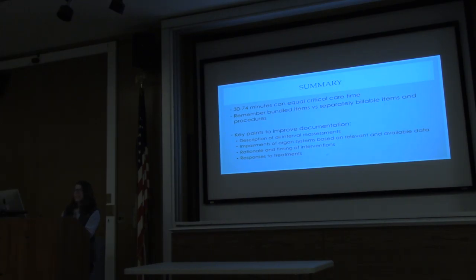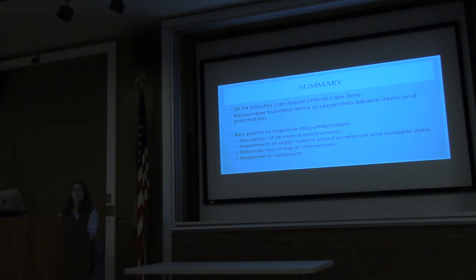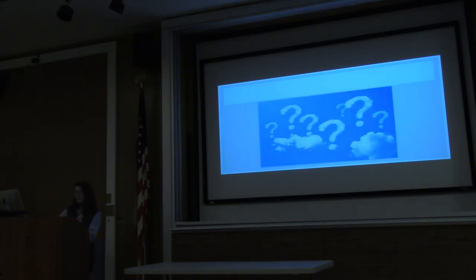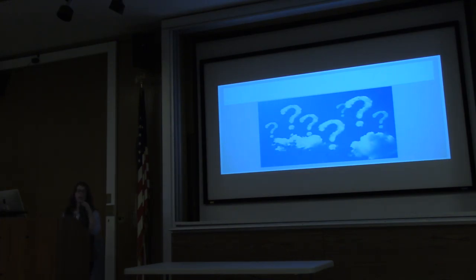Summary: 30 to 74 minutes is the 99291. Remember to document your separately billable items and state that you did not include them in your critical care time. Key points to improve documentation are part of the critical care literature but should apply to all patients. You can't bill for more than 74 minutes under 99291 — every additional 30 minutes is a 99292. You can have as many 99292s as the time it takes to care for a person. You can only bill 99291 once per visit, but if you do three hours of critical care, it would be 99291 plus 99292 times however many additional 30-minute periods.